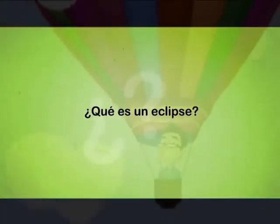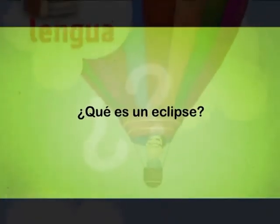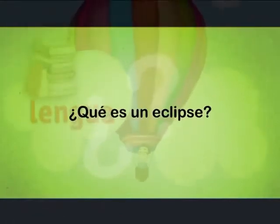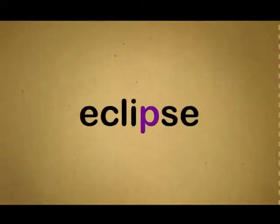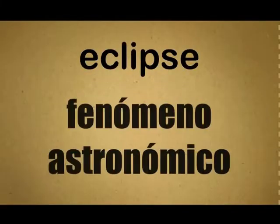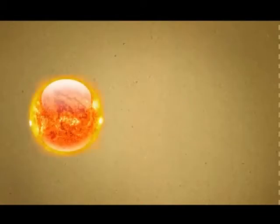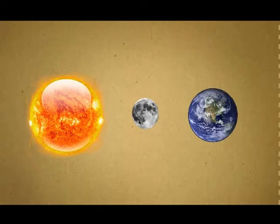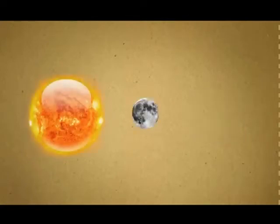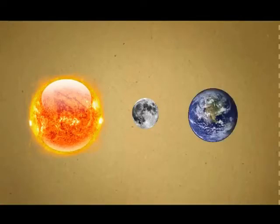¿Qué es un eclipse? Un eclipse es un fenómeno astronómico que se produce gracias a tres elementos: el Sol, la Luna y la Tierra. La posibilidad de que se produzca un eclipse depende de la posición de la Luna y el Sol dentro de sus órbitas respecto a la Tierra.